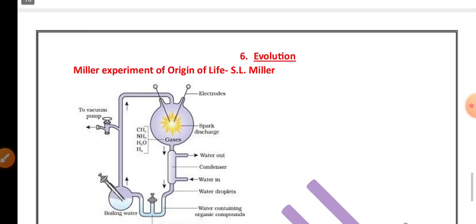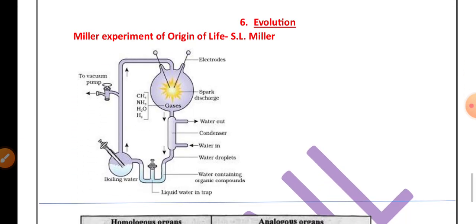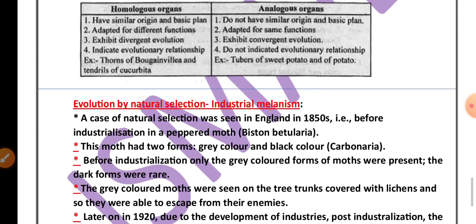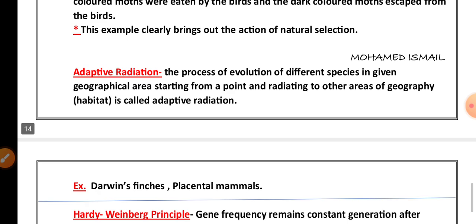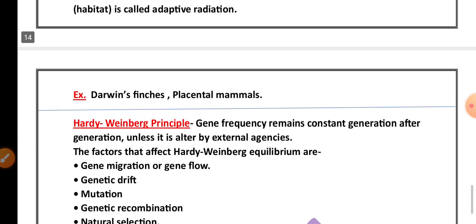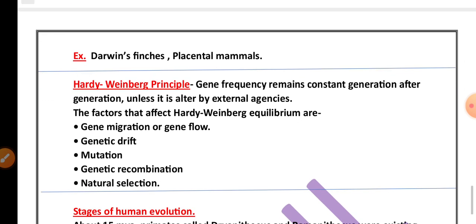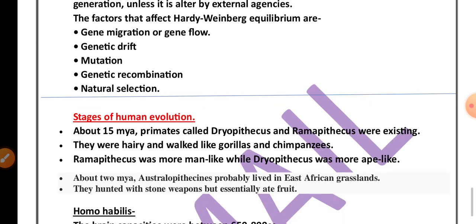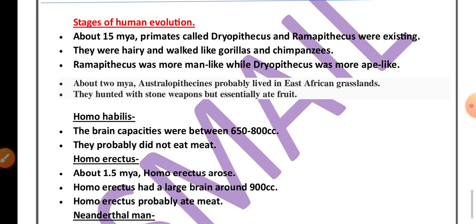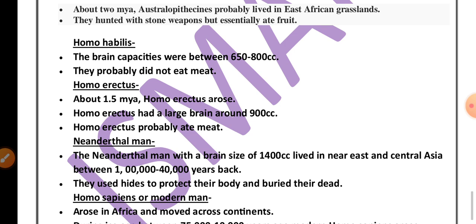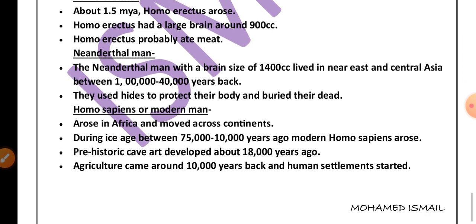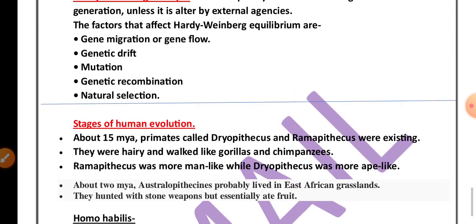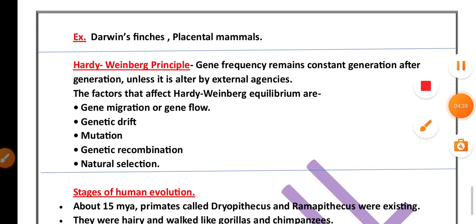The last chapter for the midterm is evolution. Miller's experiment diagram, homologous vs. analogous organ differences, and industrial melanism are very important for three marks. Adaptive radiation and examples are very important for the exam. Hardy-Weinberg principle — its definition and factors — are also very important. For five marks, the stages of human evolution are important, or for two marks they may ask about Homo habilis, Homo erectus, or Neanderthal man and their characteristics. These are the important topics from biology; check the description to download the PDF.